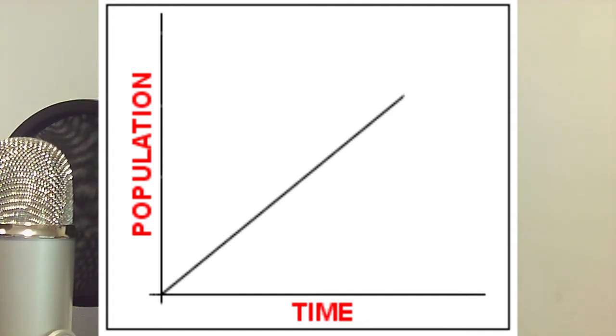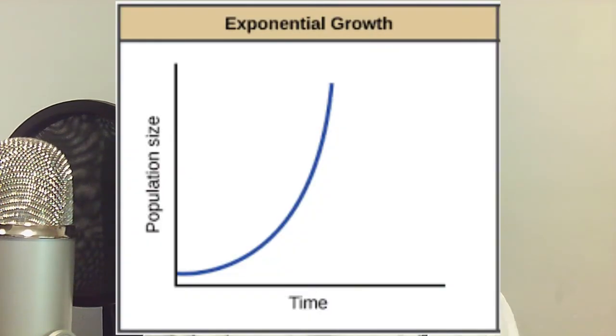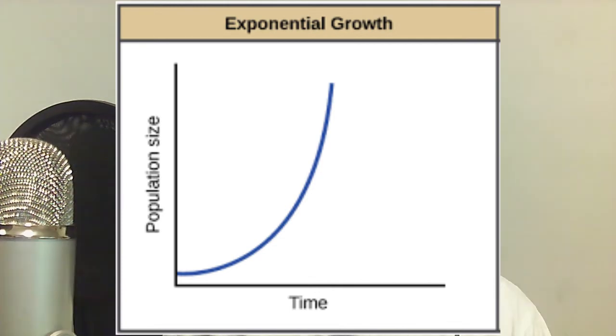We've all seen linear graphs if we've taken Algebra 1. The other type of growth is Exponential Growth, which is a lot different than linear because it is more geometric and the rate at which it grows is always doubling. The world that we live in grows at an exponential rate.